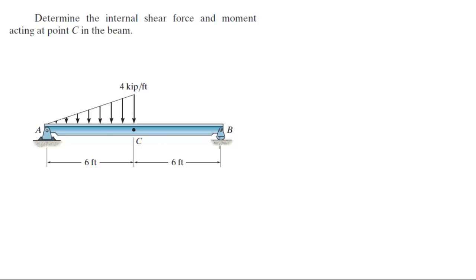So as you can see here at B we only have a vertical reaction BY, where at A we have a vertical and possibly a horizontal reaction, not necessarily but possibly.